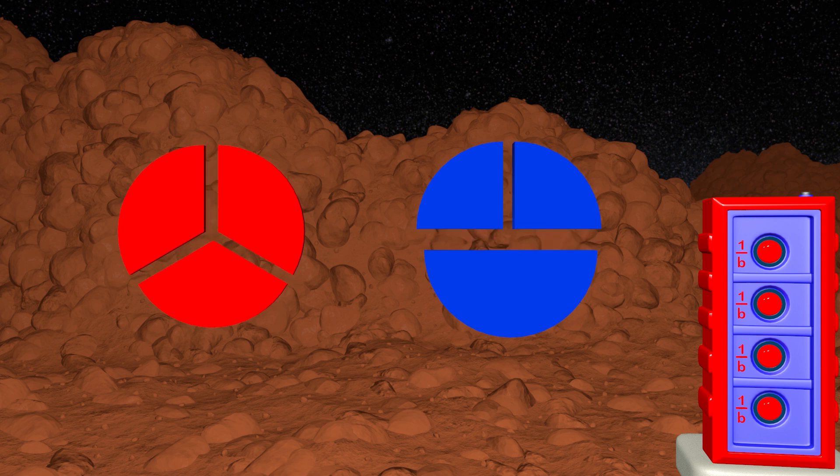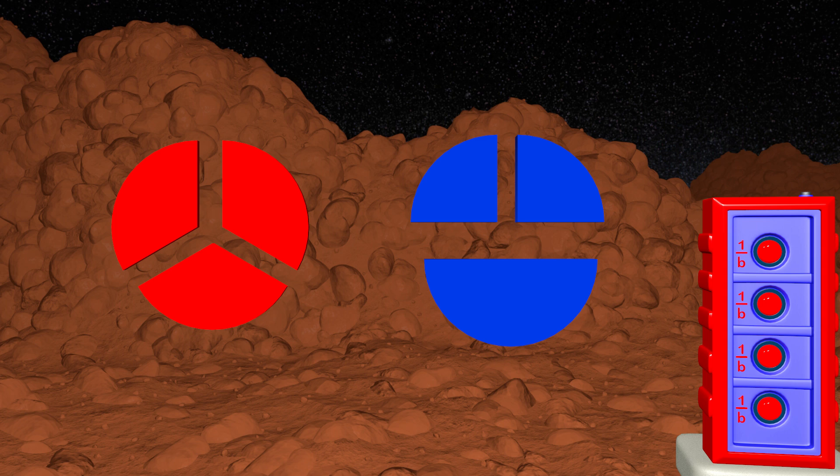A fraction represents an equal part of a whole. Here we see two circles but only one circle represents a fraction. Can you guess which one? If you guessed the red circle on the left, you are right. To be a fraction you must have all equal parts. The blue circle on the right is not divided equally so it cannot be a fraction.